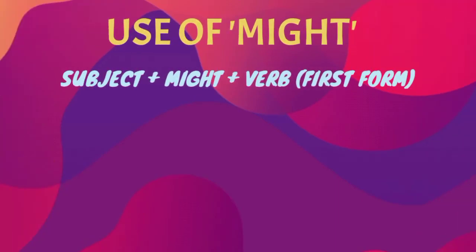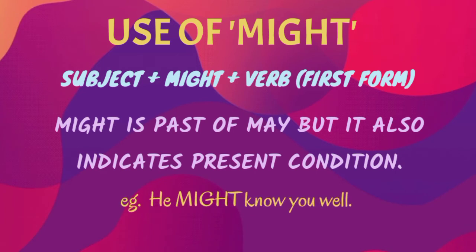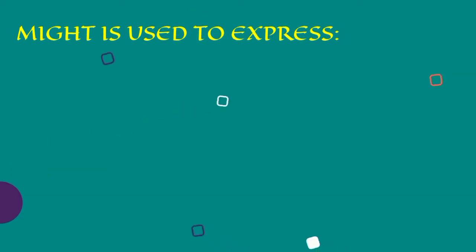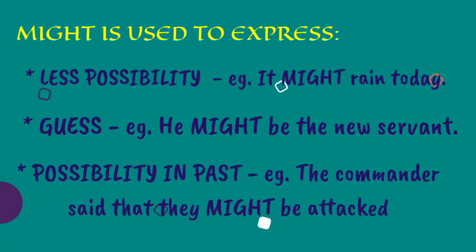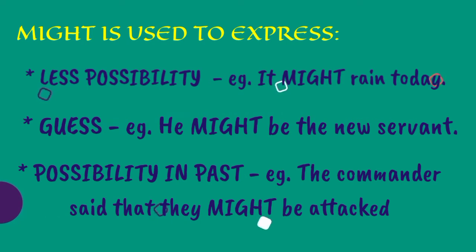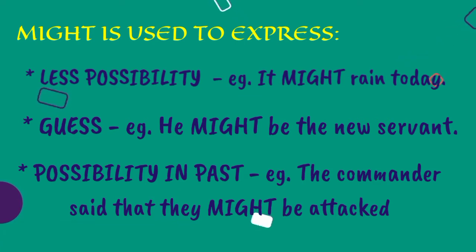Use of Might: In a sentence, first write the subject, then might, then the first form of verb. Might is the past of may, but it also indicates present condition — he might know you well. Might is used to express less possibility — it might rain today. Guess — he might be the new servant. Possibility in past — the commander said that they might be attacked.